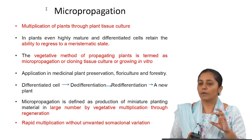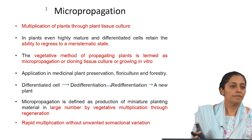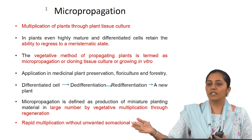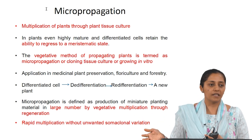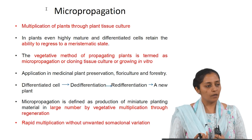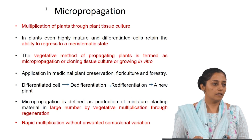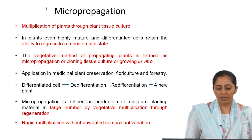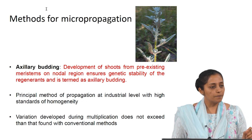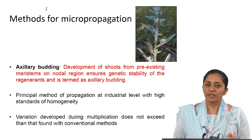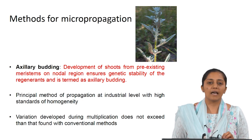This is a slow process because once you generate these plantlets under controlled conditions, hardening is required so as to acclimatize them to outside environmental conditions before they are transferred. What is required? The differentiated cell undergoes de-differentiation, then re-differentiation, and then a new plant is obtained. Development of shoots from pre-existing meristems or nodal regions ensures genetic stability of the regenerates and is termed axillary budding.